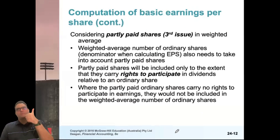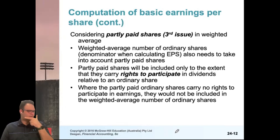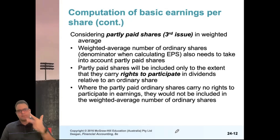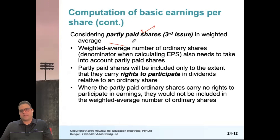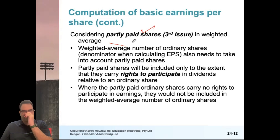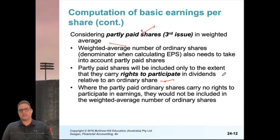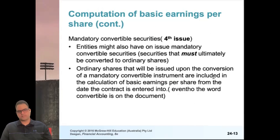To summarise the key adjustments: when a company issues shares, add them to the total outstanding shares. When the company buys back shares, reduce the total. For partly paid shares, include only the proportion paid — for example, $0.70 out of $1.00 — in the weighted average. A fourth adjustment involves convertible securities such as convertible bonds or debentures that can eventually convert into ordinary shares.